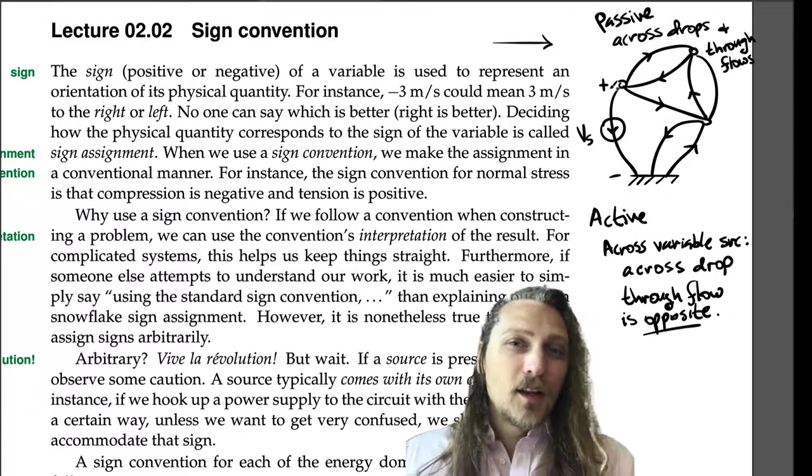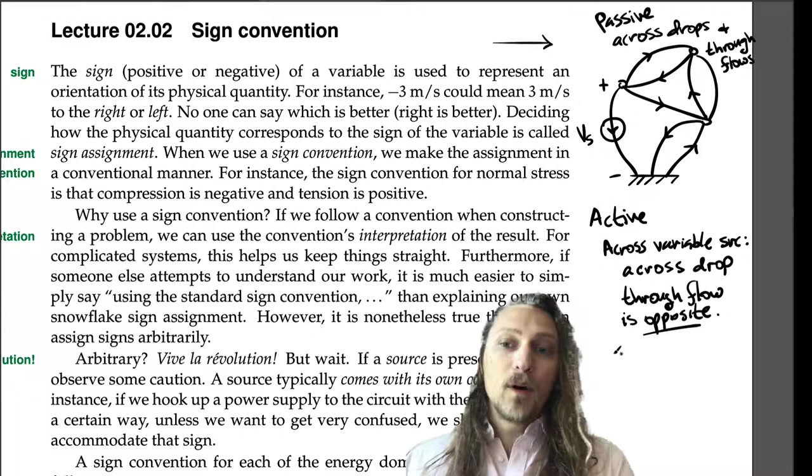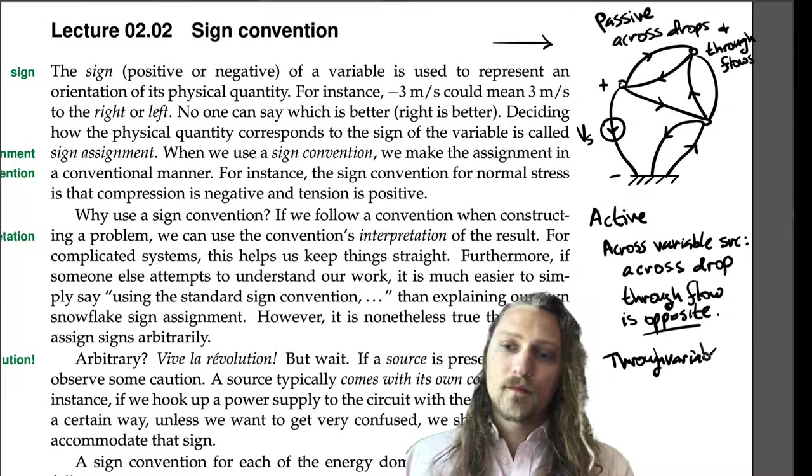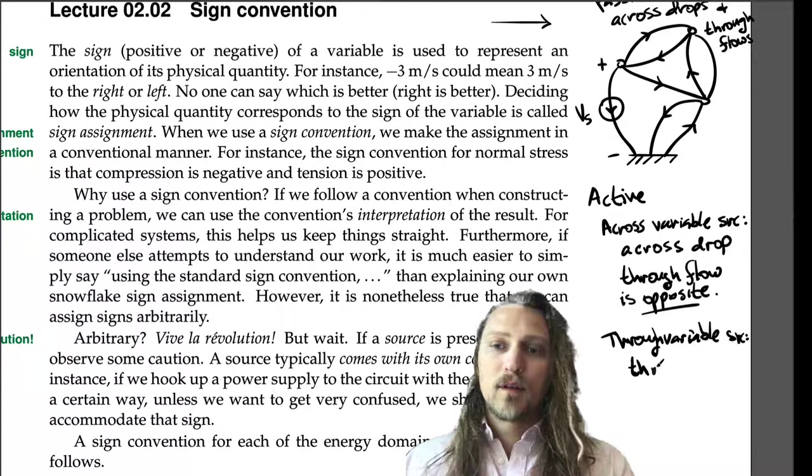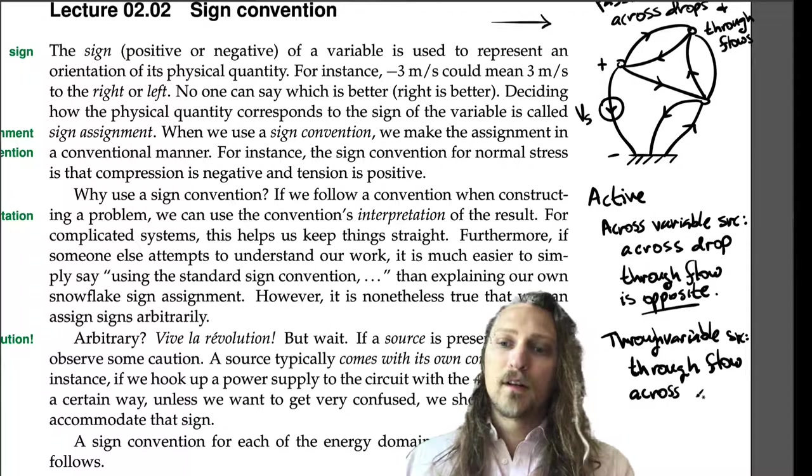So if we get a negative number or a positive number, we interpret that sign relative to the fact that if it's an active element that is an across variable source, or if it's a through variable source, then the through variable flow is in the direction of the arrow, and the across drop is opposite.